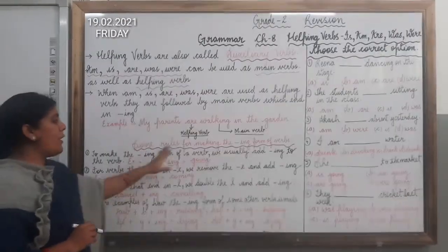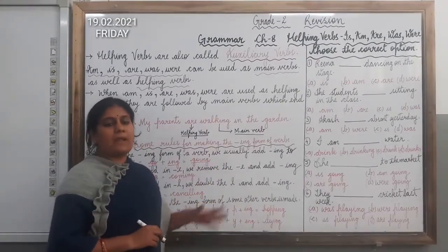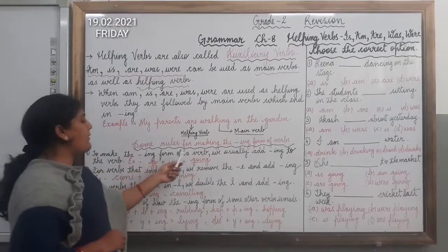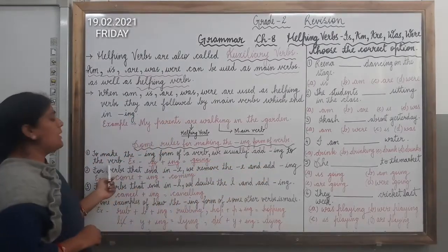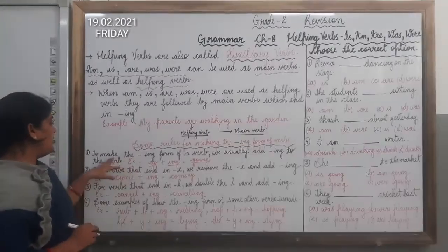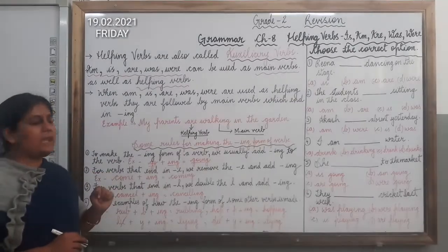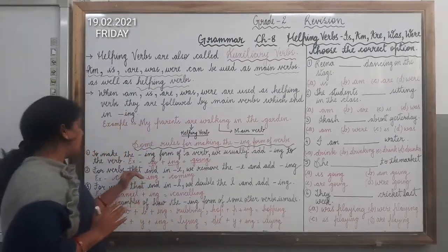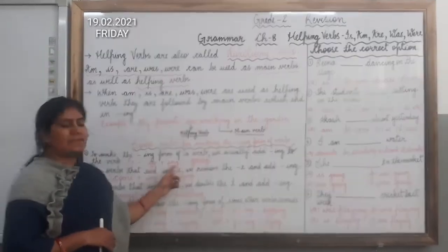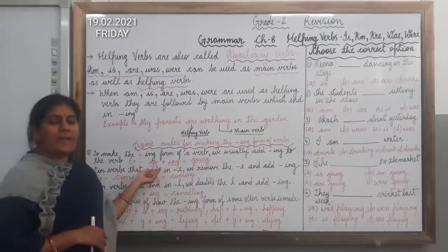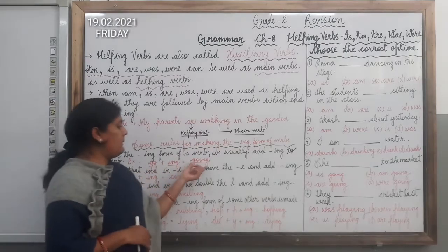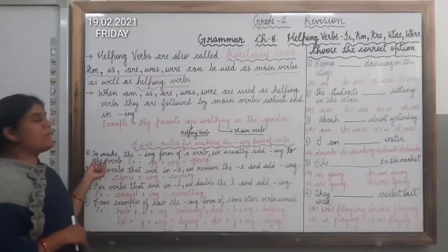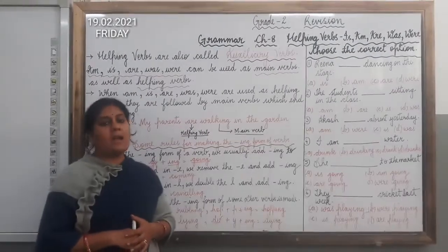Now, there are some rules for making the ing form of the verb. The first rule is: to make the ing form of a verb, we usually add ing to the verb. For example, here you can see I have written go plus ing. So here the verb is go. We will add ing to the verb and the verb will become going. So the first rule says that to make the ing form of a verb, we usually add ing to the verb.